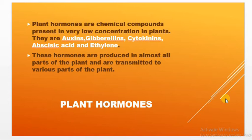The definition: plant hormones or phytohormones are specific chemical compounds which are responsible for the growth and development of the different parts of the plant. These hormones are present in very low concentration in plants. The five plant hormones are auxins, gibberellins, cytokinins, abscisic acid, and ethylene.